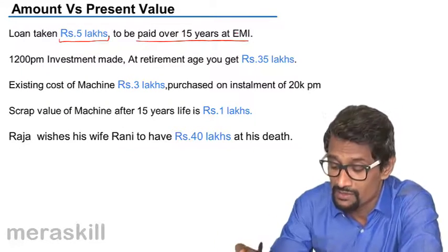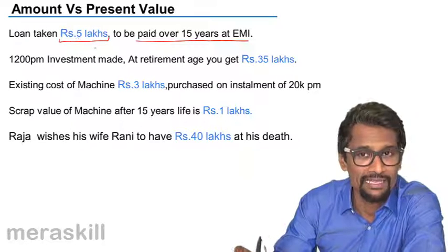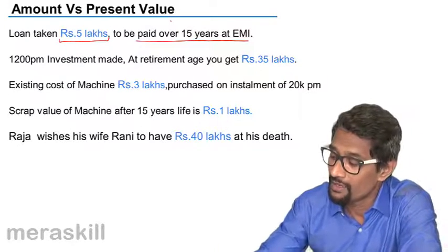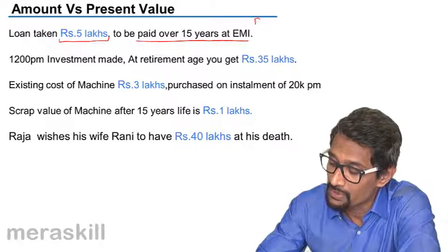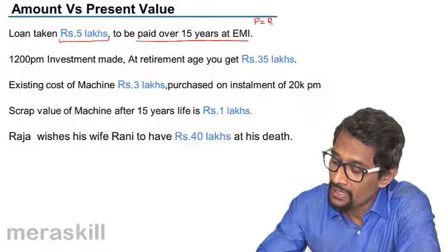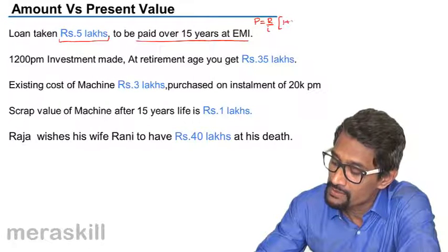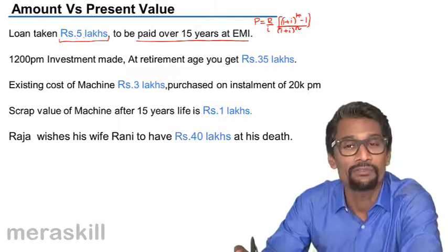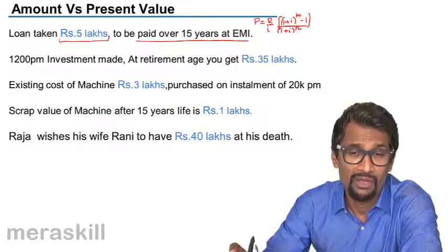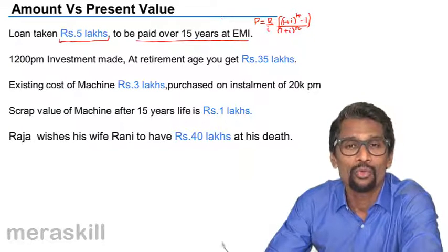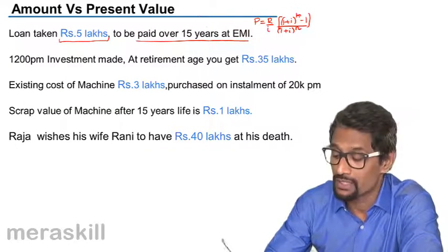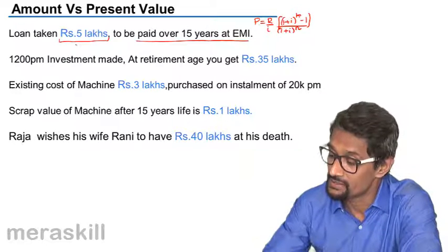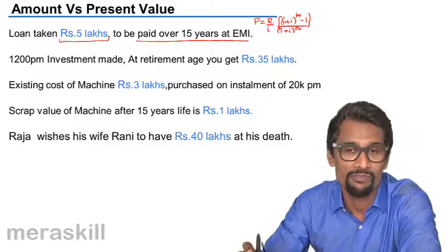The present value of this loan is 5 lakhs. How much you will pay will be based on this formula: P is equal to R upon I into (1 plus I raise to N minus 1) divided by (1 plus I raise to N). Here it's a case of present value because the current value is 5 lakhs, and the formula determines how much you pay to cover the interest accrued over 15 years. So this is definitely a case of present value.